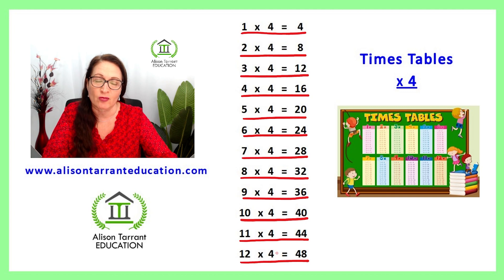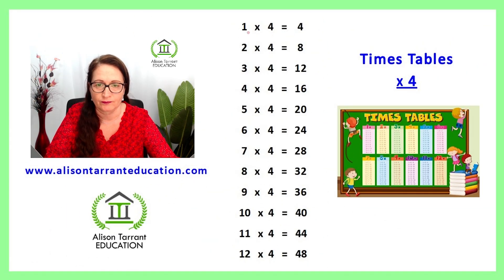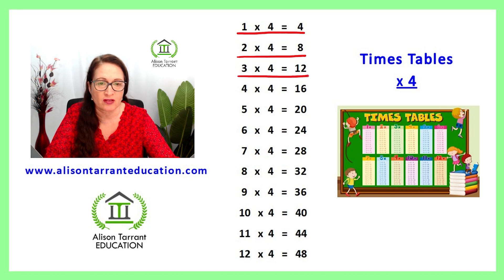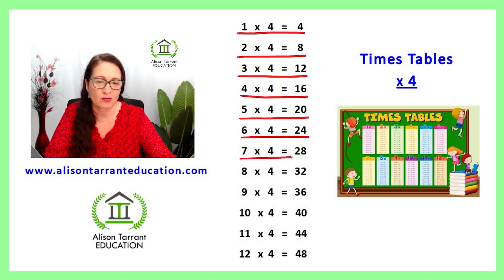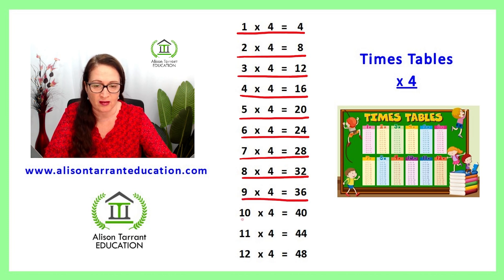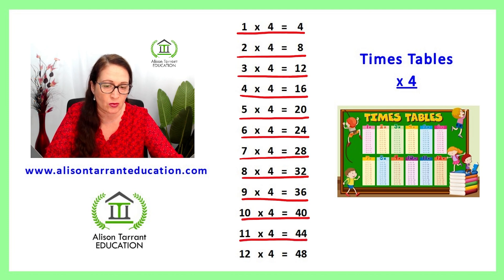Excellent. Let's practice that again. 1 times 4 is 4, 2 times 4 is 8, 3 times 4 is 12, 4 times 4 is 16, 5 times 4 is 20, 6 times 4 is 24, 7 times 4 is 28, 8 times 4 is 32, 9 times 4 is 36, 10 times 4 is 40, 11 times 4 is 44, 12 times 4 is 48.